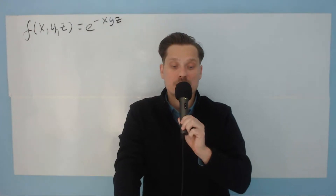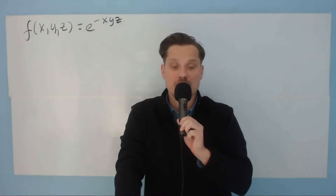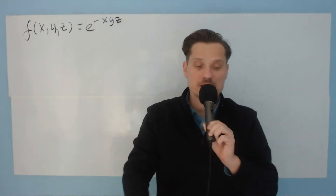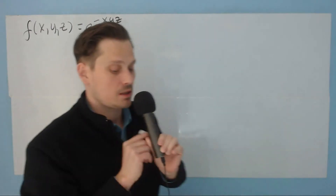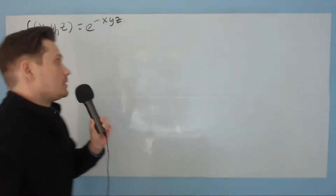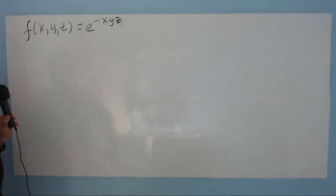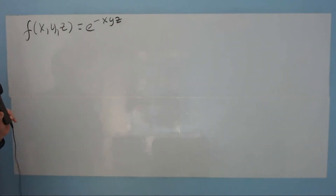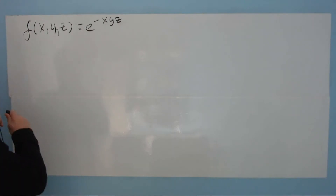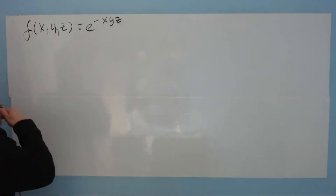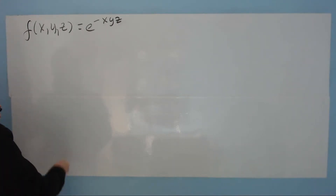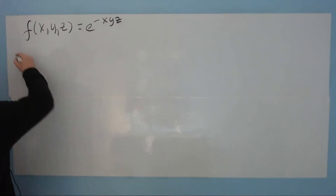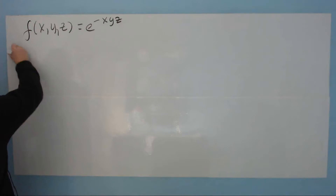In this one, let's take a look at finding some partial derivatives of e to the negative x, y, z. So we have the following: f of x, y, z equals e to the negative x, y, z. And the first partial derivative will be with respect to x.